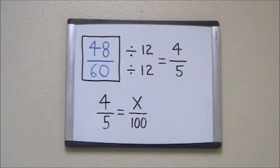So we take our 100, divide it by 5 to get 20, take our 20, multiply it by 4 to get 80, and we've got 80 hundredths.